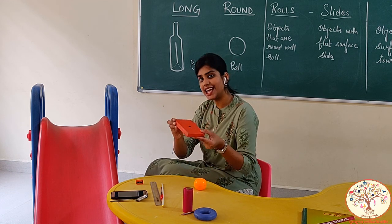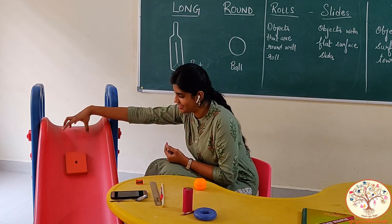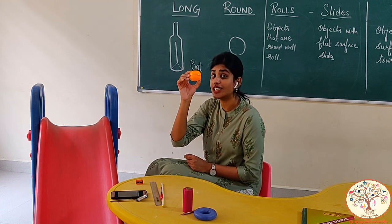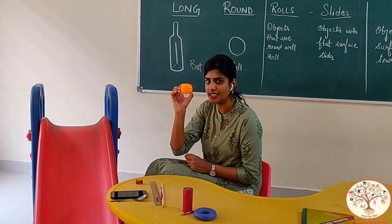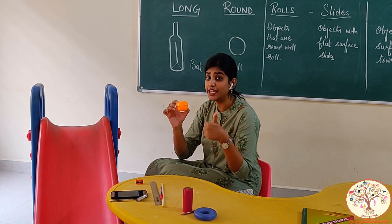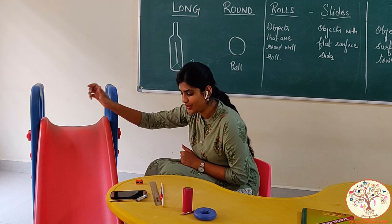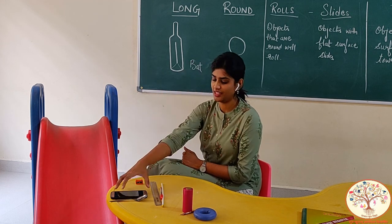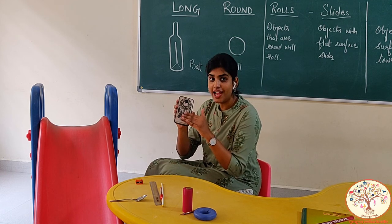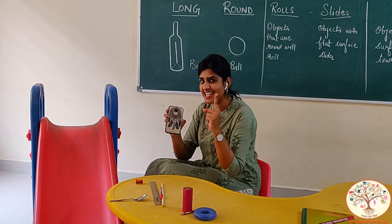It has a flat surface — it will slide. Now let's check. What is this? An orange. Orange is round, so it will roll. Phone — phone has flat surface, it will slide.